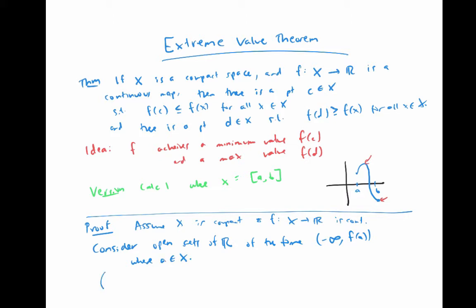If we intersect these open sets with our image f of x, we get an open set of f of x in the subspace topology.